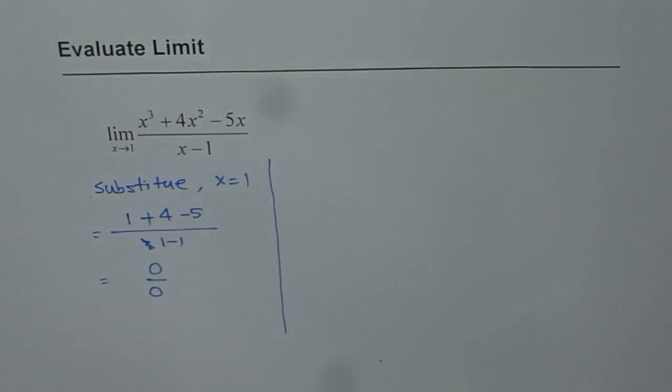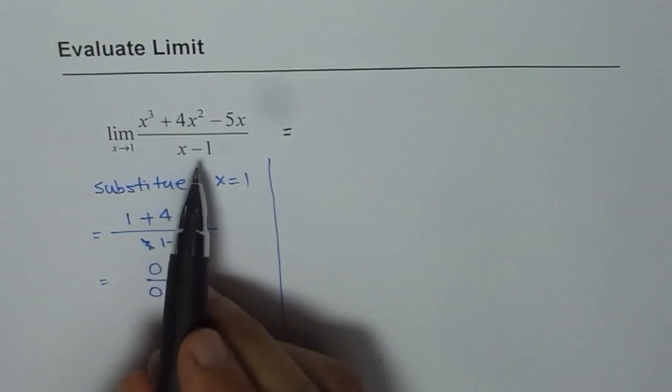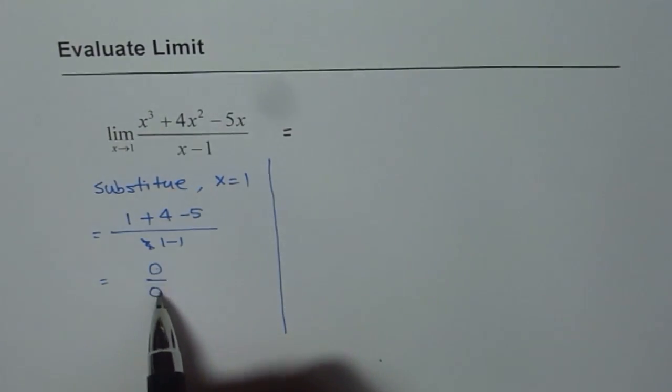Now since limit of a function is value which the function is approaching, so we can find that at that discontinuity, what value function is approaching. And that we can do by getting rid of a common factor which caused 0 over 0.